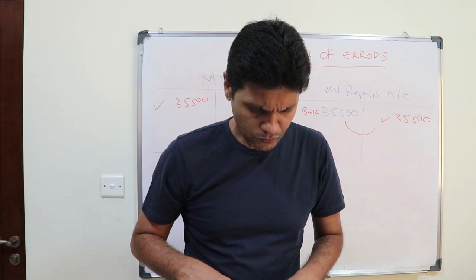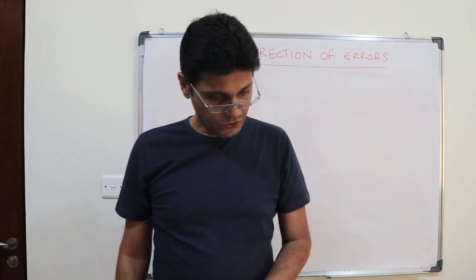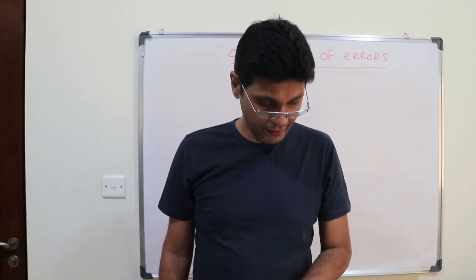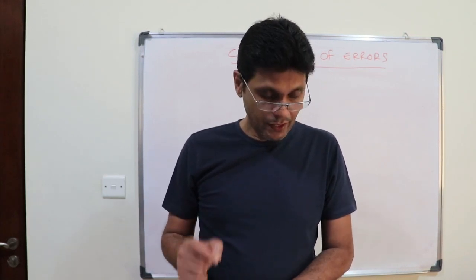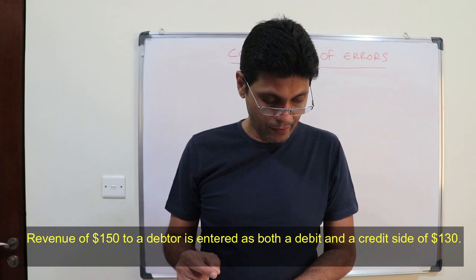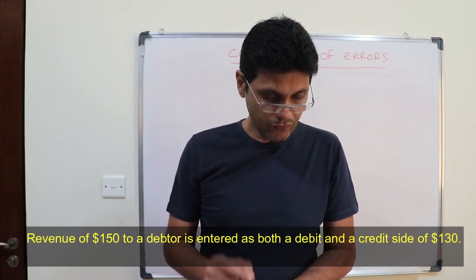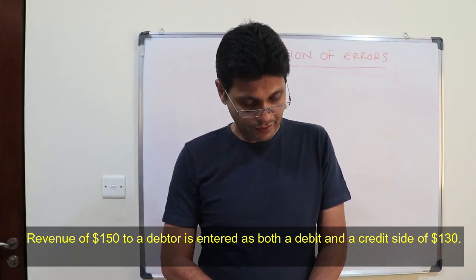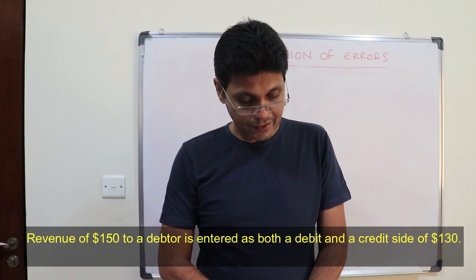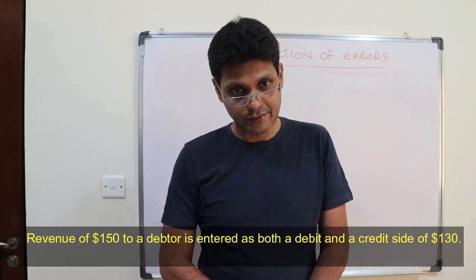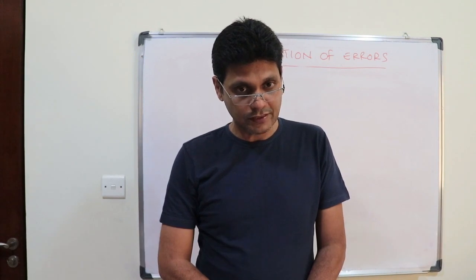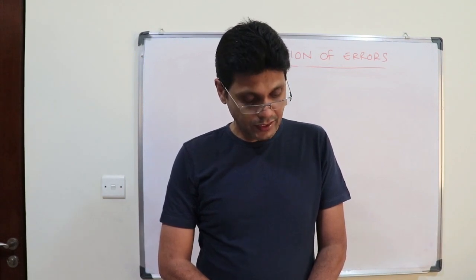Next question — tell me the type of error. Revenue of one hundred and fifty dollars is entered as both a debit and credit of one hundred and thirty dollars. So what is the type of error? Errors of original entry.